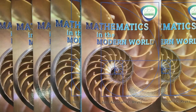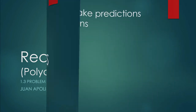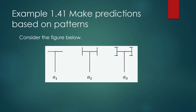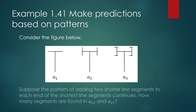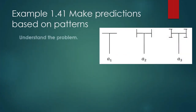We shall show how to apply Polya's four-step strategy to solve problems. Example 1.41: make predictions based on patterns. Consider the figure below — these are collections of sticks at right angles with each other. Suppose the pattern of adding two shorter line segments to each end of the shortest line segment continues. How many segments are found in the 12th term, a sub 12, and the 21st term, a sub 21?